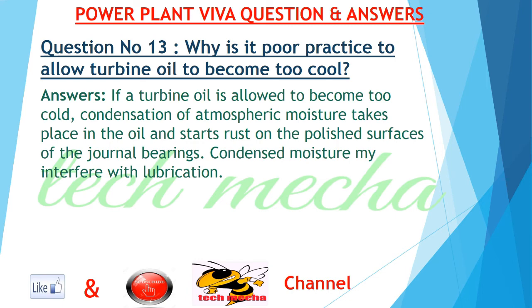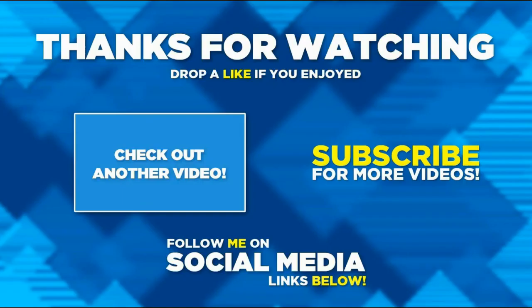Question number 13: Why is it poor practice to allow turbine oil to become too cool? Answer: If turbine oil is allowed to become too cold, condensation of atmospheric moisture takes place in the oil and starts rust on the polished surfaces of the journal bearings. Condensed moisture may interfere with lubrication and with the airtight integrity of the turbine.